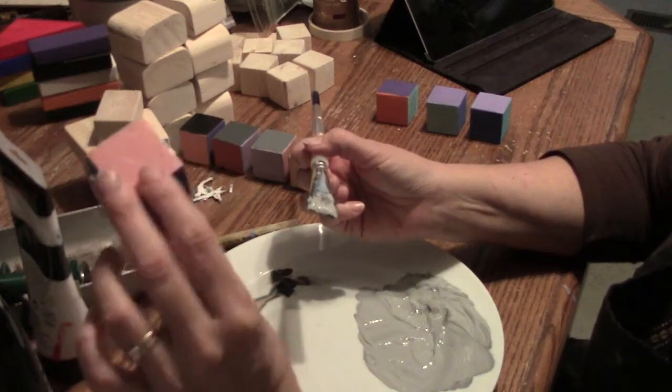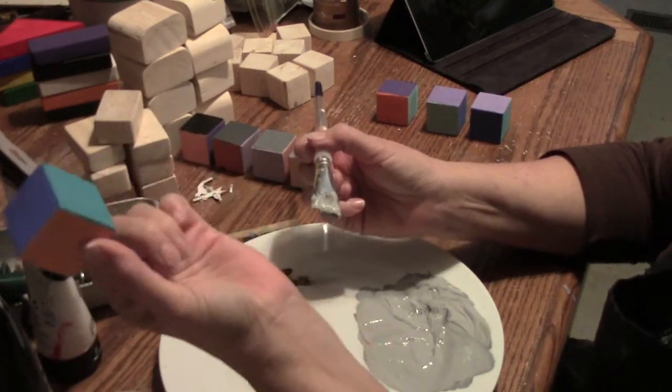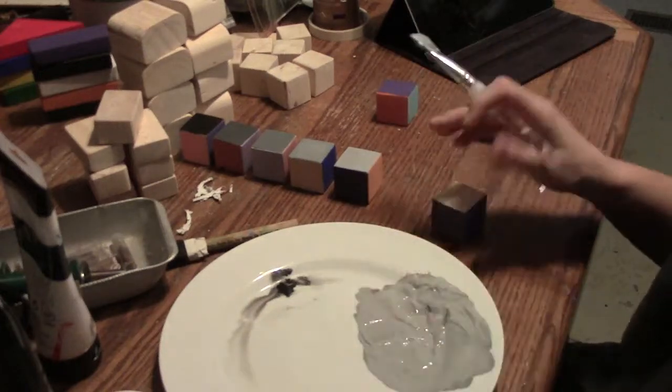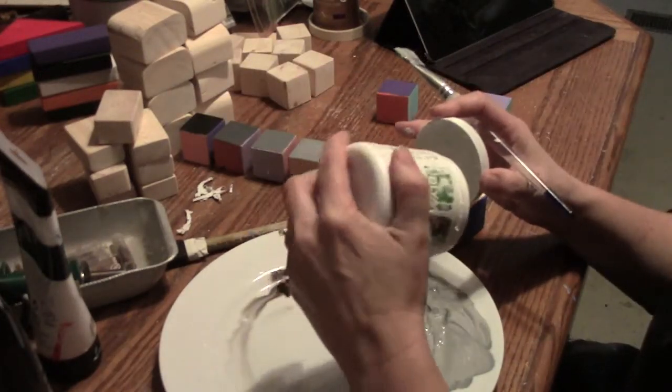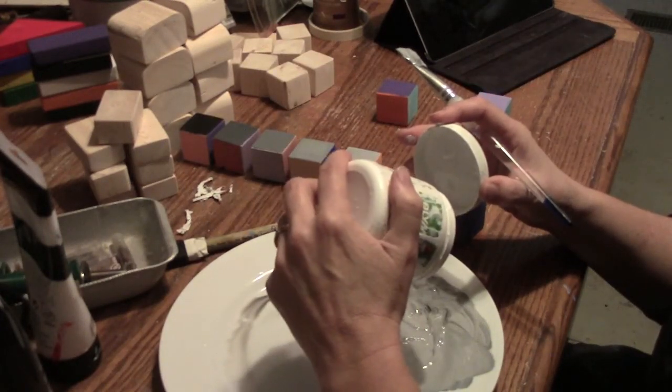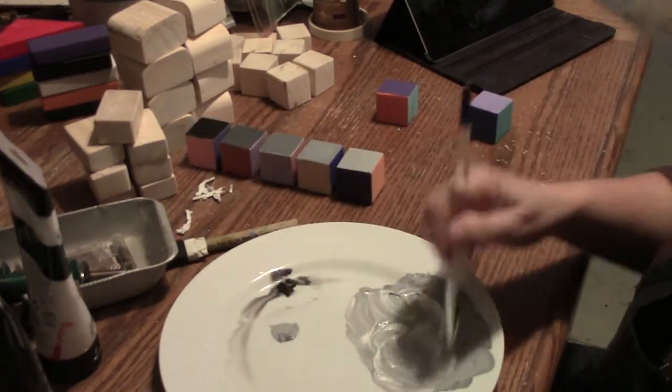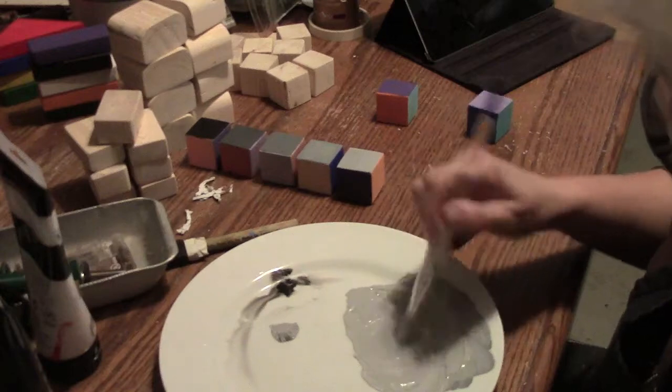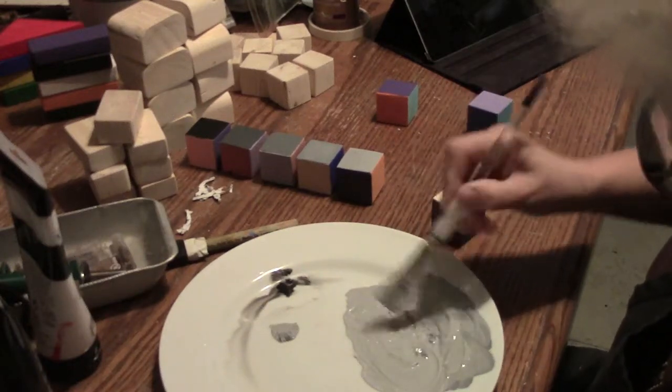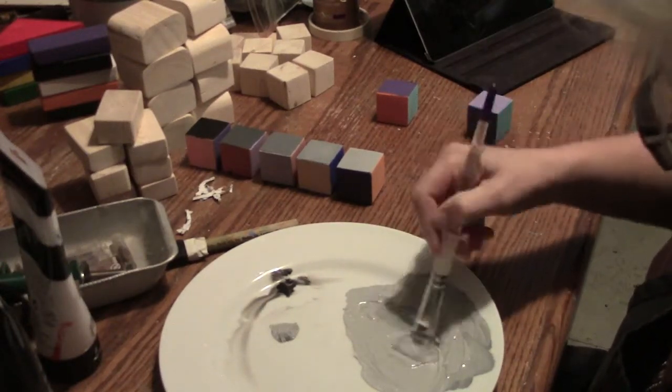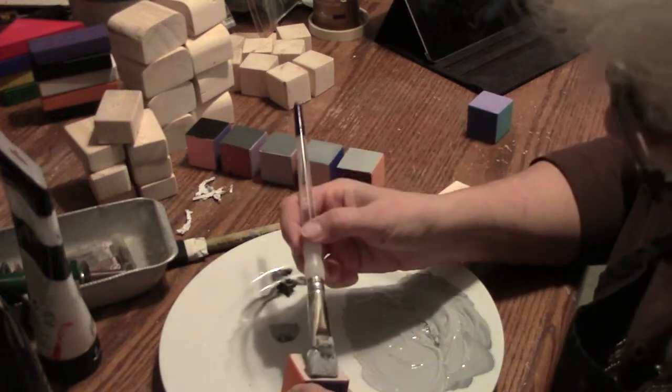Then I add a little bit of white paint to the black changing the value to a lighter value. Choose another block to paint. Paint the second value on one side of a new block. Then repeat this process until all blocks have a shade of this color on one side.